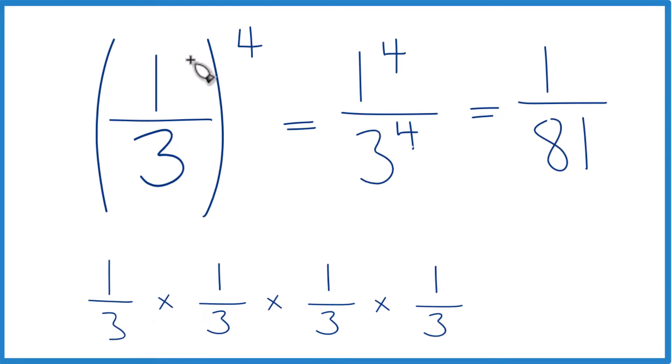So in answer to our question, when we take one-third to the fourth power, we end up with the fraction 1 over 81. This is a lot smaller than one-third. But that makes sense—we're taking a fraction of a fraction of a fraction here, and we end up with 1 over 81, which is pretty small. This is Dr. B.